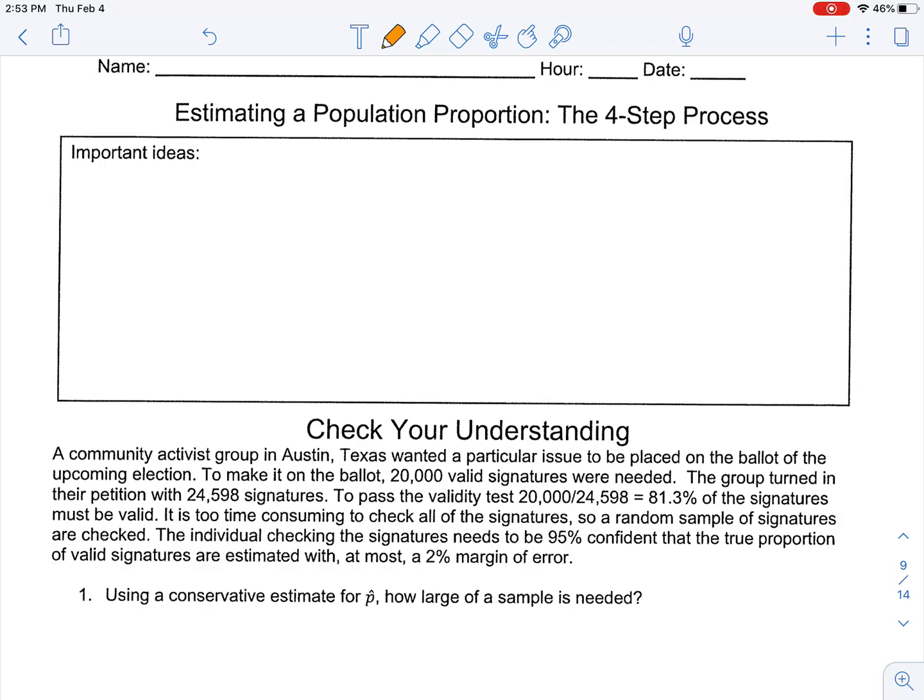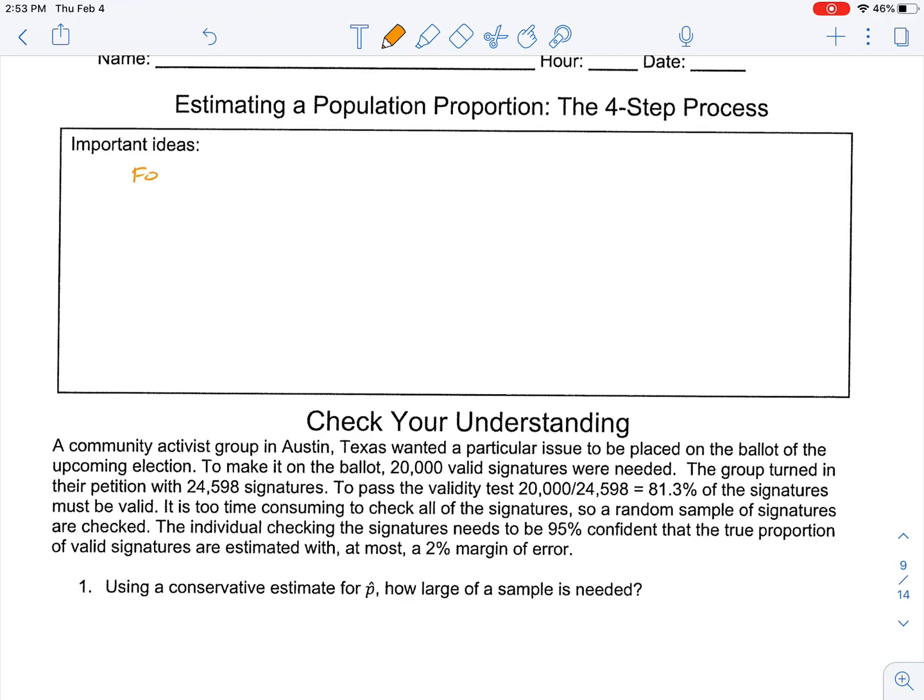Welcome back. Today we're going to talk about the four-step process for estimating a population proportion. Up to this point, what we've had is kind of an idea where we construct these confidence intervals, and we have a sample proportion, and we try to figure out what kind of interval can we set up to be reasonably sure that the true population proportion is in that interval. Well, there's a formal process for this, and it's a four-step process.